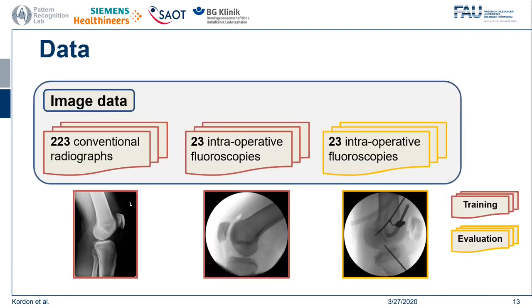All five strategies were evaluated on x-ray images of the knee joint. Thinking back to our research question, we wanted an algorithm which performs well for different kinds of overlaid objects despite having little to none of such image characteristics in the training corpus. We therefore selected 223 conventional radiographs and 23 intraoperative fluoroscopies without overlaid objects for training. For testing and evaluation we used 23 intraoperative fluoroscopies with various occlusions such as drilling devices, guide pins, screw and plate implants, or surgical suction tubes.